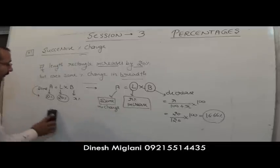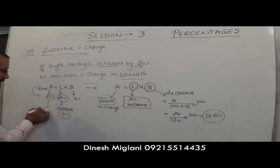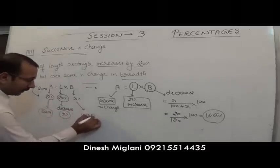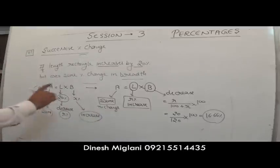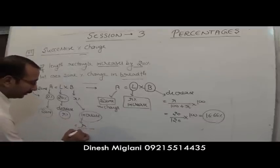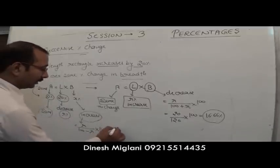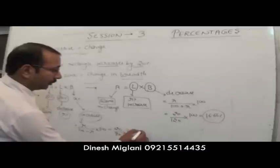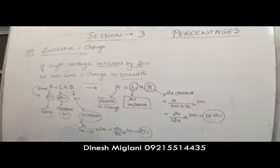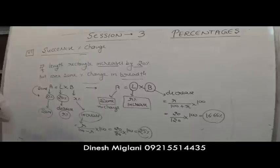If length decreases by 20% and area remains same, breadth increases by 20/80 × 100 = 25%. So the two formulas are: when increase r% is given and you need the compensating decrease, use r/(100 + r) × 100; when decrease r% is given and you need the compensating increase, use r/(100 − r) × 100.